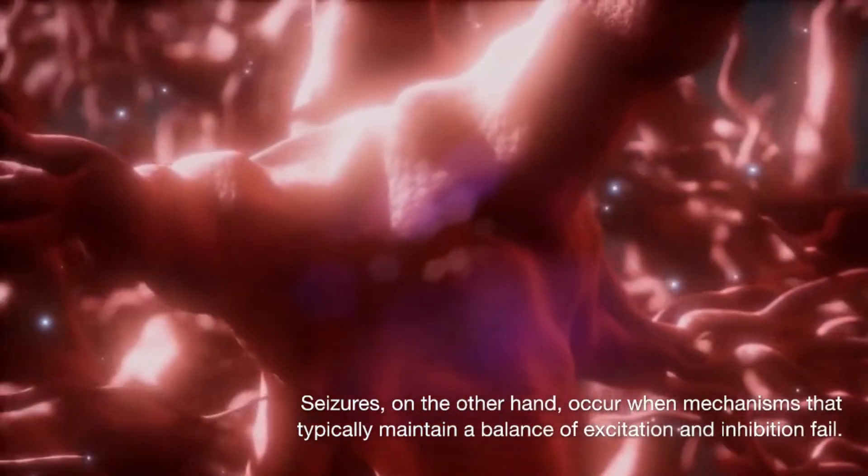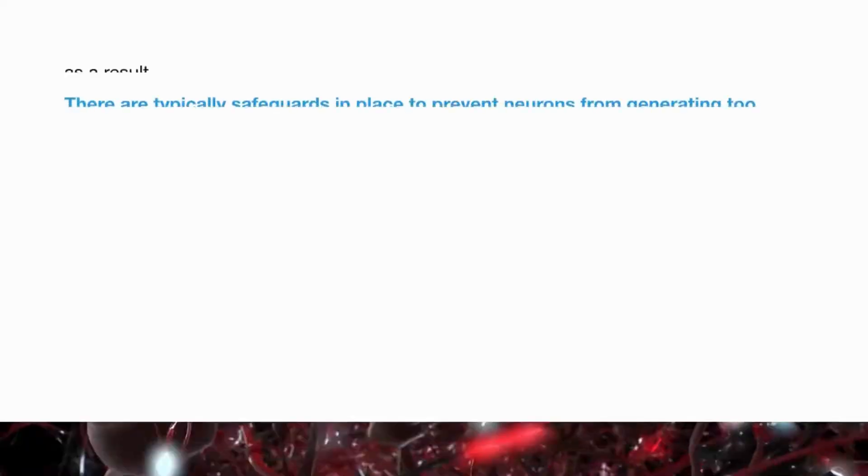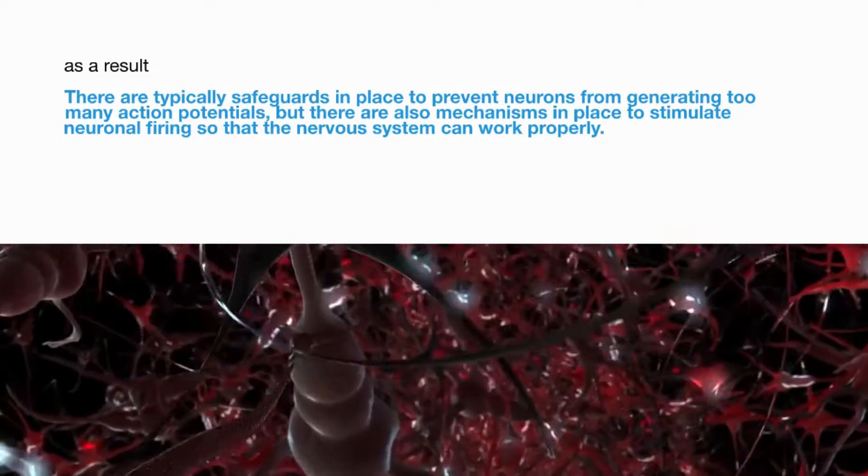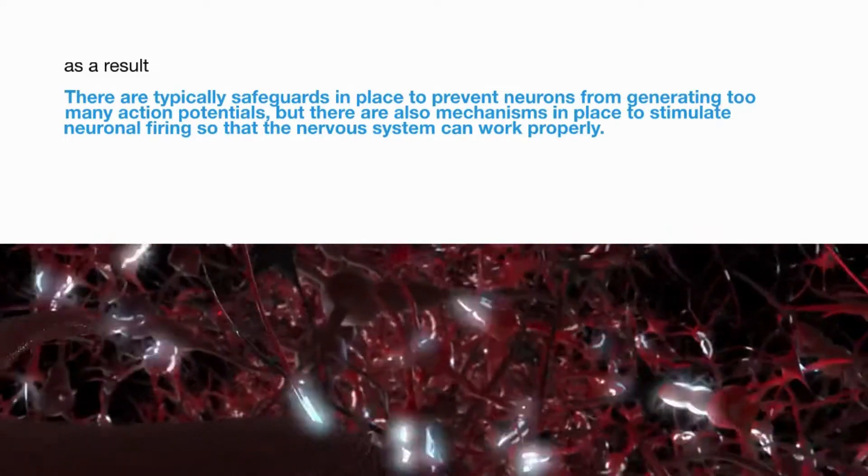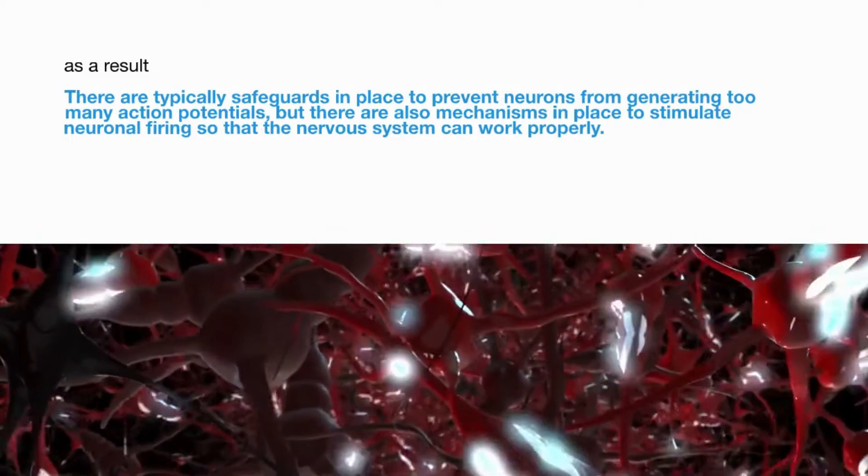As a result, there are typically safeguards in place to prevent neurons from generating too many action potentials, but there are also mechanisms in place to stimulate neuronal firing so that the nervous system can work properly.